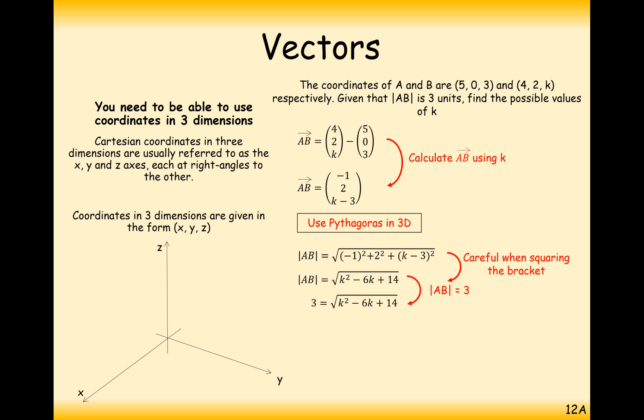Now we just have to rearrange a quadratic equation. Let's get rid of the square root by squaring both sides. So 9 equals K squared minus 6K plus 14. Subtract the 9 and factorize: K minus 5, K minus 1. So K is 5 or K is 1.